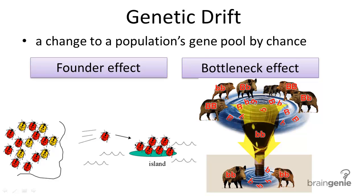In this lesson, we will define genetic drift and two types of genetic drift: the bottleneck effect and the founder effect. First, what is genetic drift, and what does it have to do with evolutionary theory?